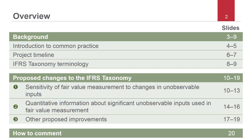The first section is related to the sensitivity analysis. The second section is related to disclosure of quantitative information about significant unobservable inputs used in fair value measurement. The last section contains all other changes we are proposing, which relate to various IFRS 13 disclosures. We will only provide a high-level overview here; however, a more detailed slide deck covering the entire content and examples is included in the package of supporting materials on the project page.